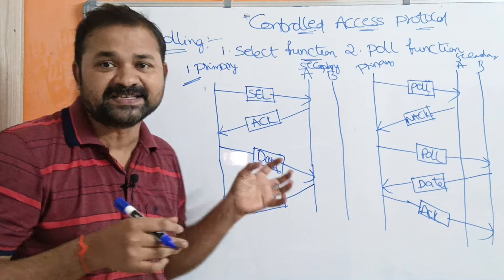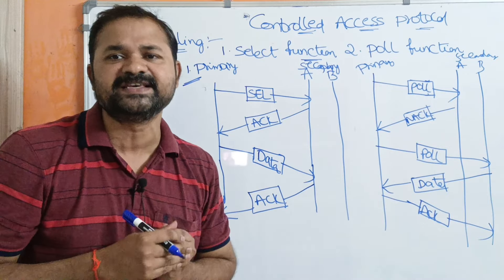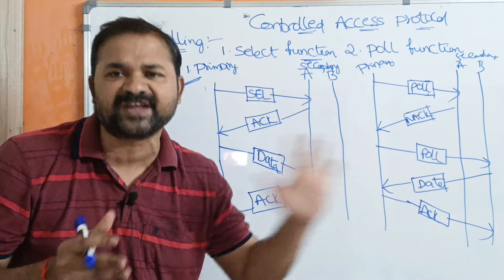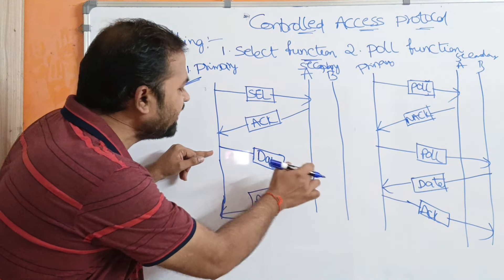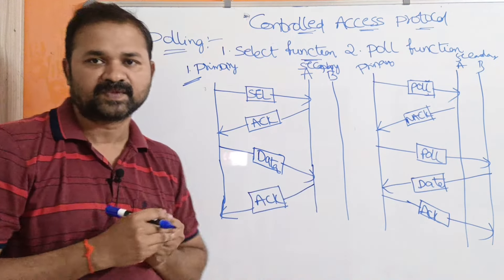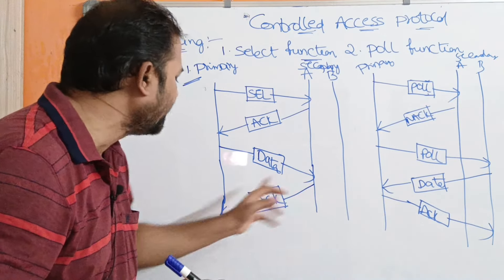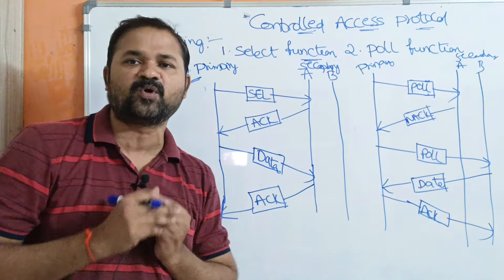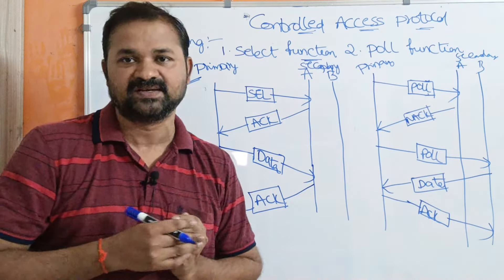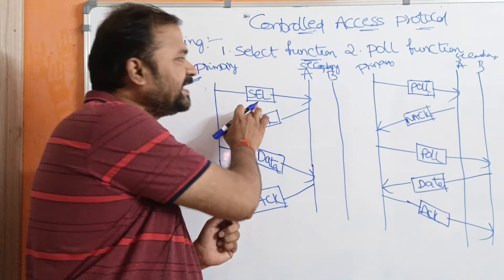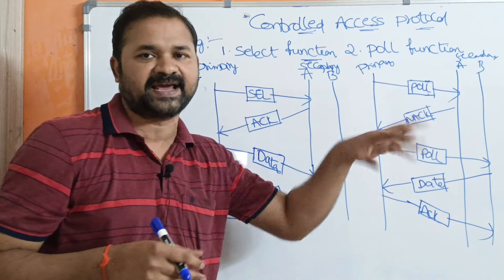A sends an acknowledgement frame back to the primary device. After receiving the acknowledgement, the primary device knows that secondary device A is free. The primary device can then send data to A, and A will provide an acknowledgement for the received data. The SEL frame contains the destination address — A's address, B's address, and so on.